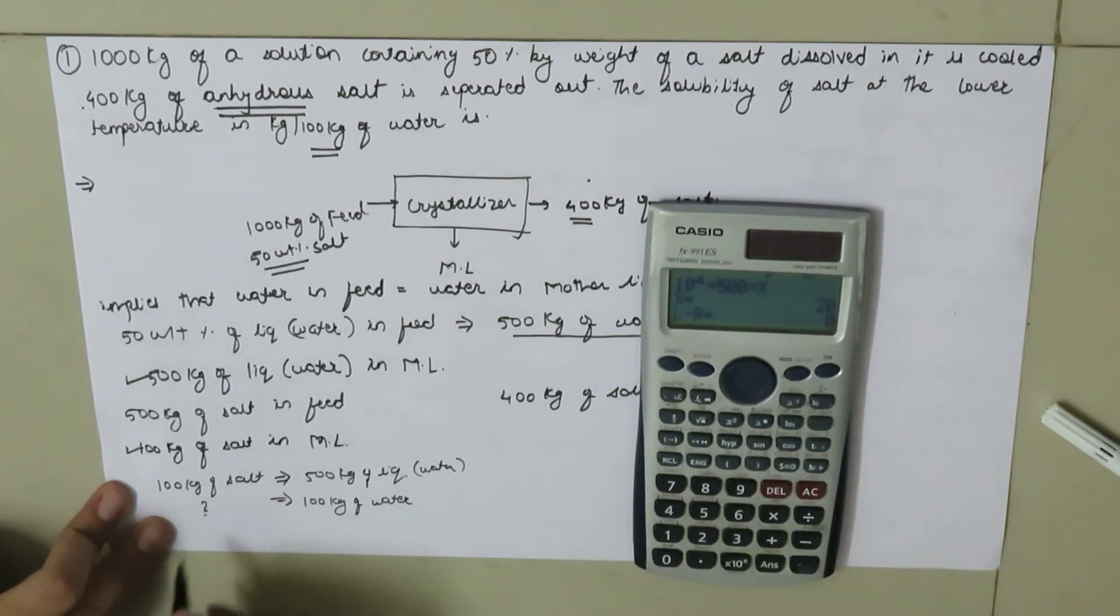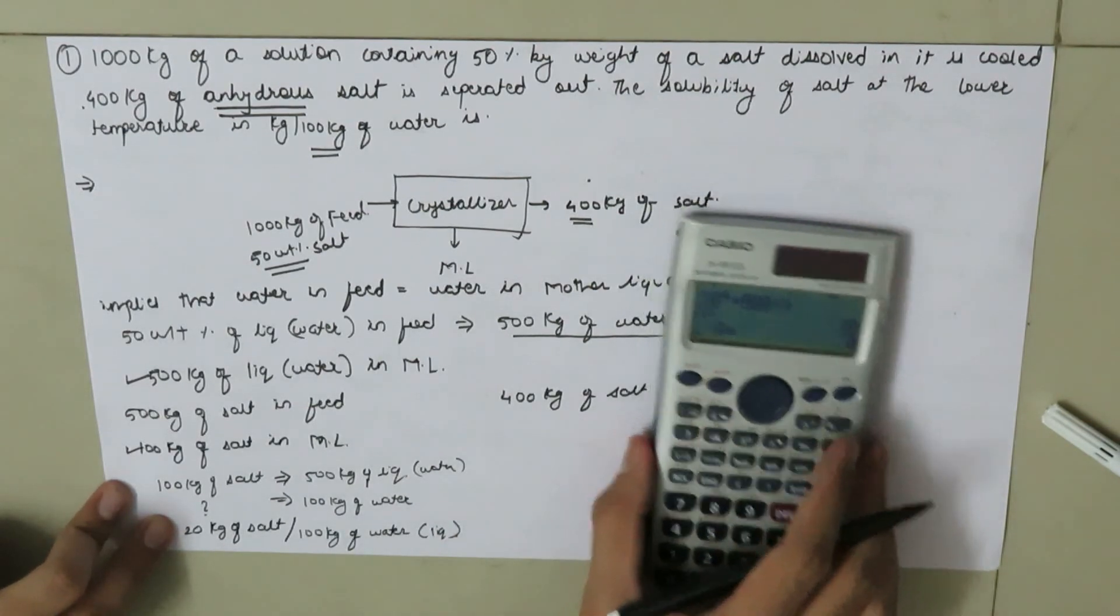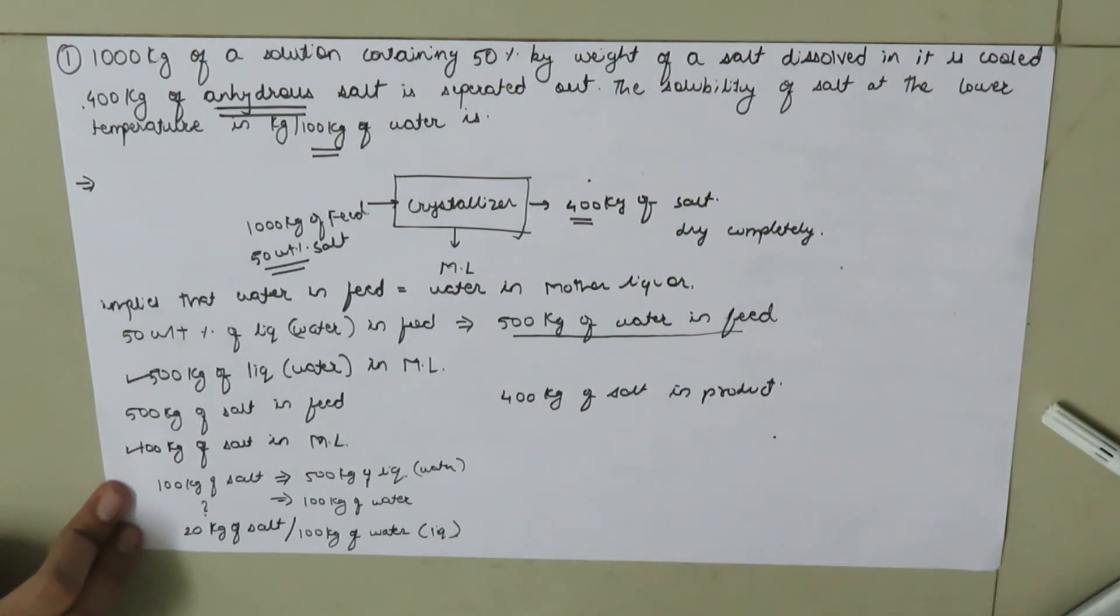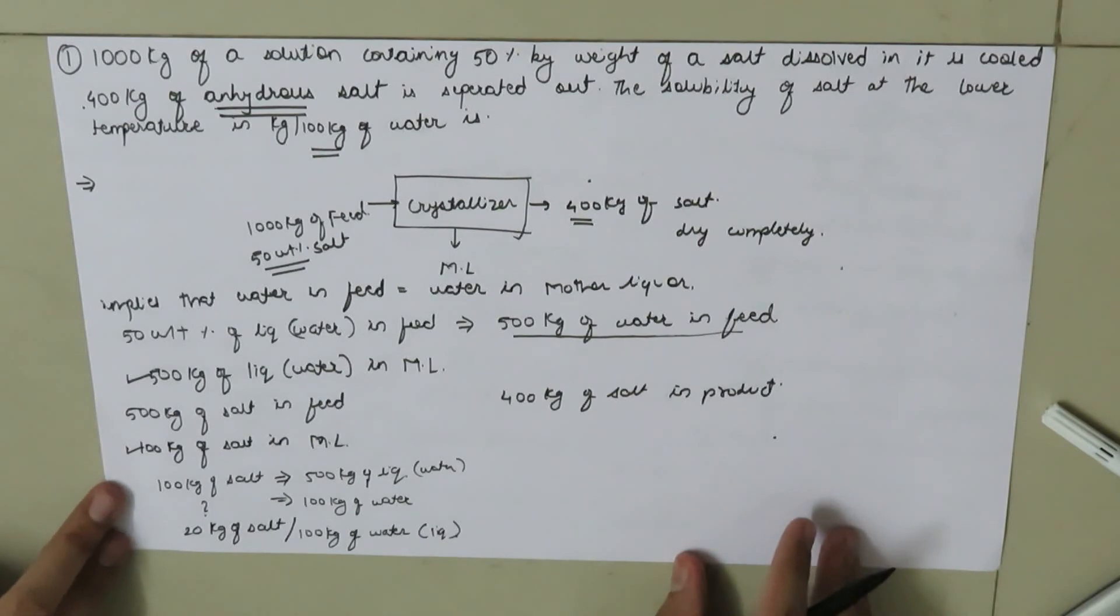So we have 20 kg of salt per 100 kg of water or liquid. This was a small technique on how to deal with such types of problems. Thank you for watching this video.